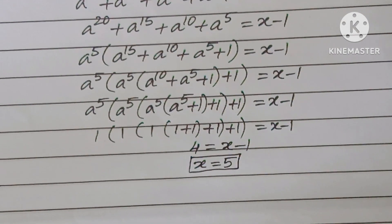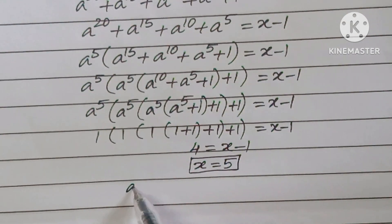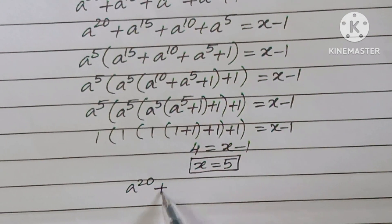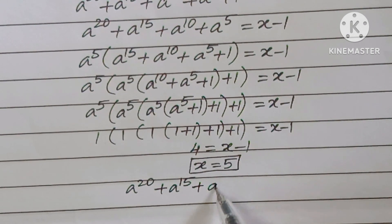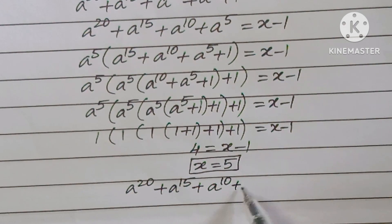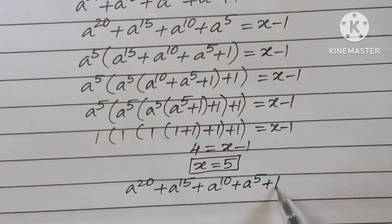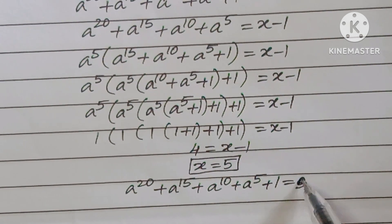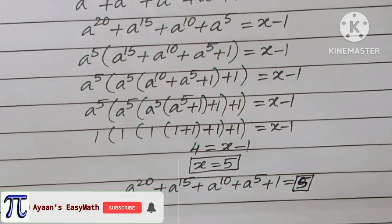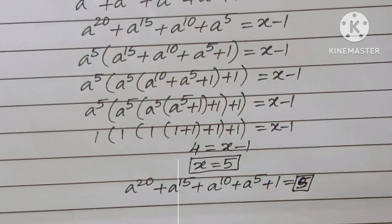Therefore, a to the power of 20 plus a to the power of 15 plus a to the power of 10 plus a to the power of 5 plus 1 is equal to 5. I believe this information is valuable. If you think so, please do consider a subscription. Thank you.